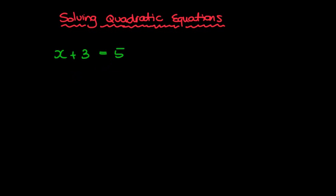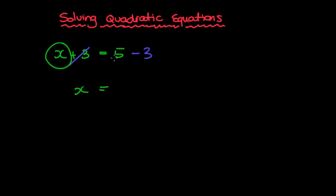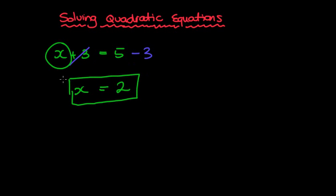It's a nice easy question. We want to get rid of the plus 3, so we take it over to the other side, leaving us with just x. Remember, we want to isolate x. We take 3 from both sides, leaving x equals 2. We can check: 2 plus 3 is 5. Very basic stuff.